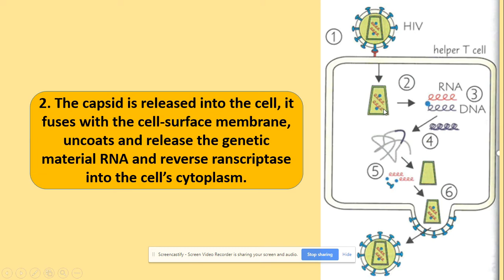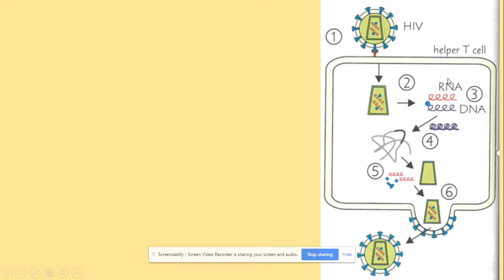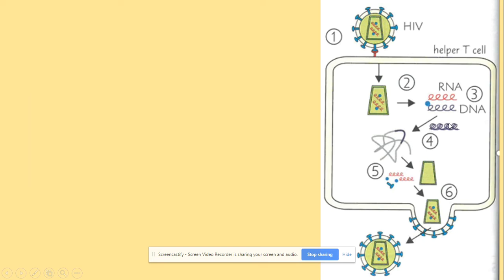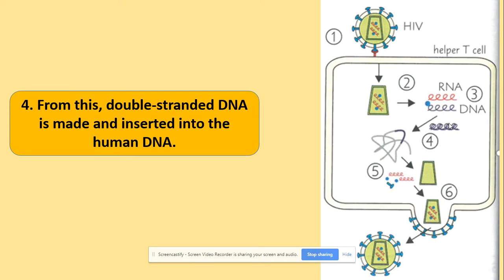Now inside the T helper cell, reverse transcriptase — an enzyme that makes DNA from the virus's RNA — carries out step three: making complementary DNA. This DNA is initially single-stranded, and then a complementary double-stranded DNA is produced, similar to DNA replication using DNA polymerase. The double-stranded DNA is then inserted into the T helper cell's genome.